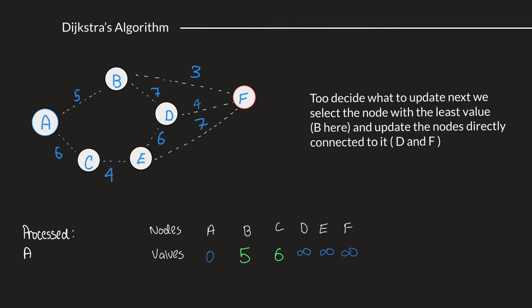To decide what to update next, we select the node with the least value, which, in between B and C, is B. And update all the nodes that are directly connected to it. So, the nodes that are directly connected to B would be A, D, and F. But, since A is already processed, we don't look at that node. Let's look at D and F.